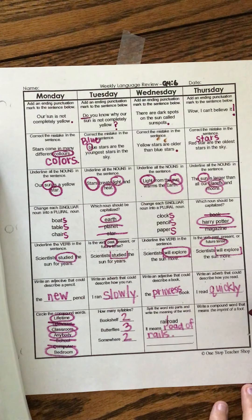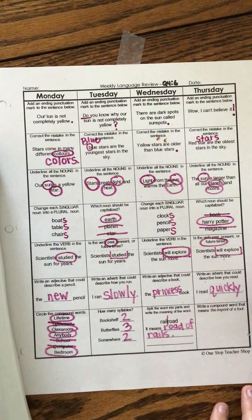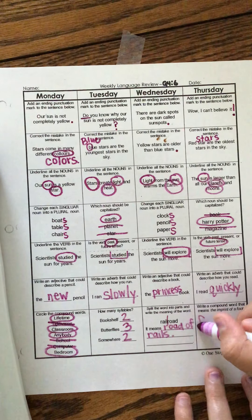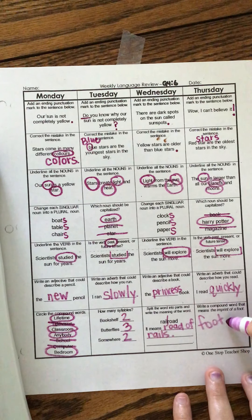All right. Write a compound word that means the imprint of a foot. Foot. Print.